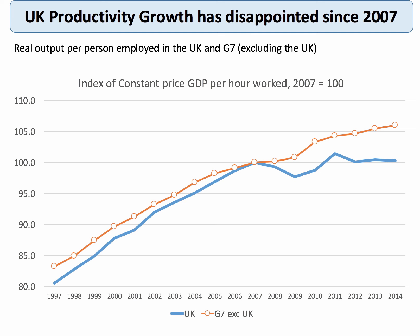The line for the UK is shown in blue and a separate line for the G7 countries, including Japan and the United States but excluding the UK, is in red. Hopefully you can see that there was some fairly strong productivity growth from 1997 through to 2006. But since then, partly because of the recession, output per worker hour in the UK has essentially stagnated. It seems as if productivity growth in the UK has stalled.